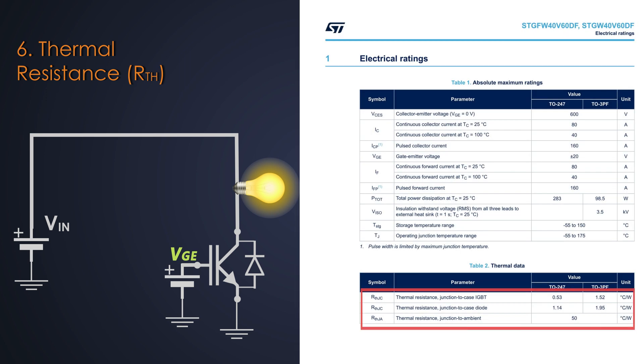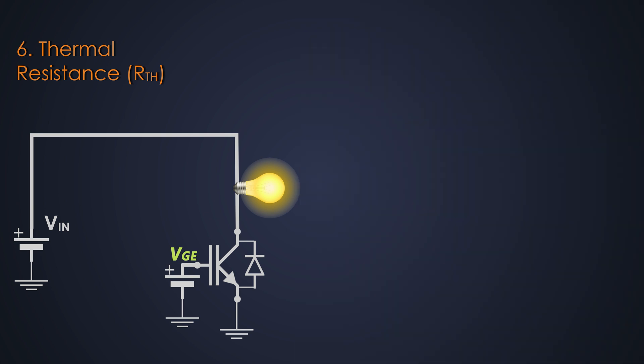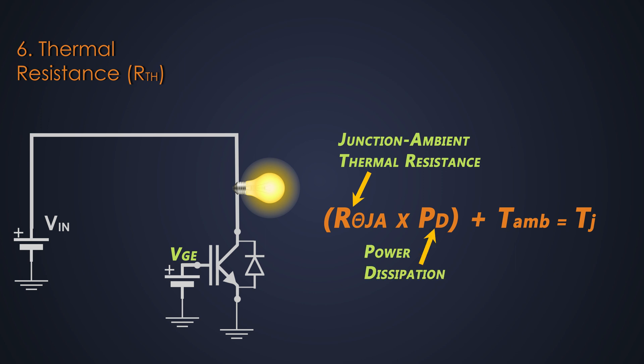Generally, R-theta JC and R-theta JA are mentioned in the datasheet of the IGBTs. If you want to calculate the temperature rise in an IGBT, then this formula is very helpful. Where R-theta JA is the thermal resistance between junction to ambient, which is always mentioned in the datasheet of the IGBT. PD is the total power dissipation across IGBT.